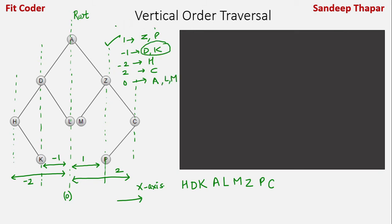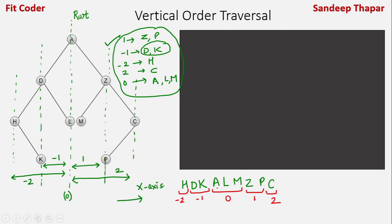Nodes A, L, and M are at distance 0. We'll create a map and store the distances. At the end, we'll print the map starting from the minus 2 distance: for minus 2 the node is H, for minus 1 the nodes are D and K, for 0 the nodes are A, L, and M, for 1 the nodes are Z and P, and for 2 the node is C. We just have to create a map storing nodes according to their distance from the root node, then print the map contents by distance. This gives us the vertical order traversal.